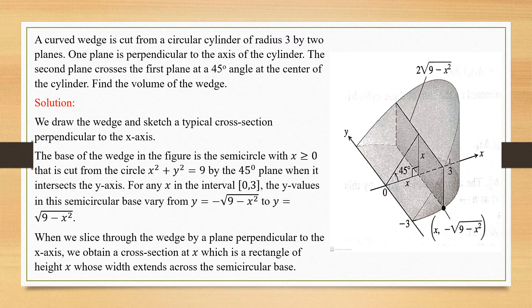Now we draw the wedge and sketch a typical cross section perpendicular to the x axis. This is the x axis and y axis. The cylinder is like this — the first plane is cutting perpendicularly and the second plane is cutting at an angle of 45 degrees. We are going to find the volume of this particular piece of wedge. The base of the wedge is a semicircle, with x greater than or equal to 0.